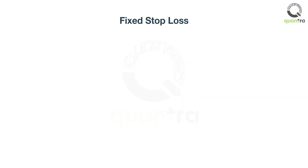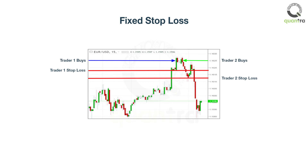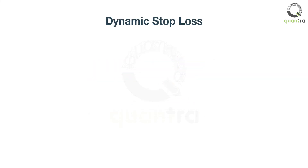Setting the right stop loss is very important for every trader. Most traders prefer to set a static, or fixed stop loss for every trade. This stop loss usually reflects the risk appetite of the trader and explains how much the trader is willing to lose in a given trade. Static stop loss risks triggering stops when the market is volatile. To avoid such a situation, it is advisable to have a stop loss that is proportional to the volatility of the market.